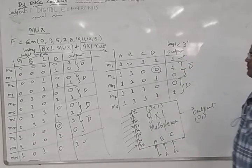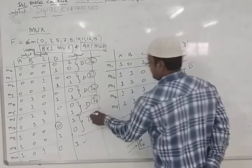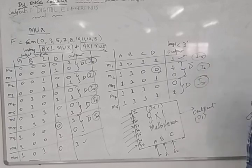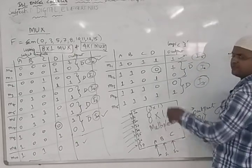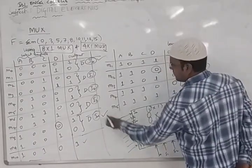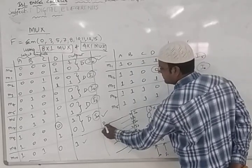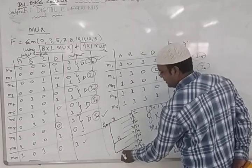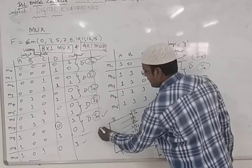The inputs I0, I4, I6 are connected to D-bar. To get D-bar, we use a NOT gate on input D, then short-circuit those connections to I0, I4, and I6. This is clearly D-bar at those positions.